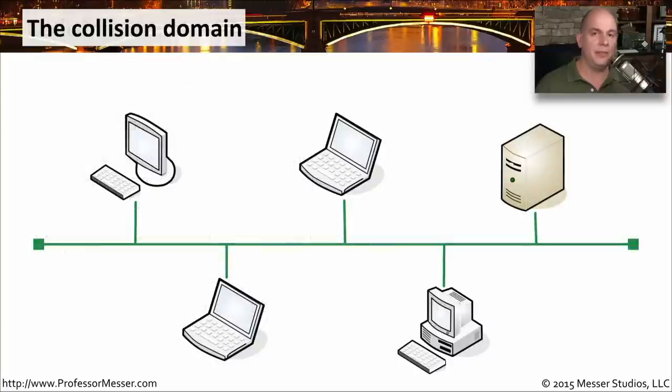In the early days of ethernet, we communicated over coax networks. And there was a single wire that everybody connected to. And that single wire or single ethernet bus was one big collision domain. Everyone could hear everyone else when they were communicating. And if more than one device was to send simultaneously, we would have a collision.